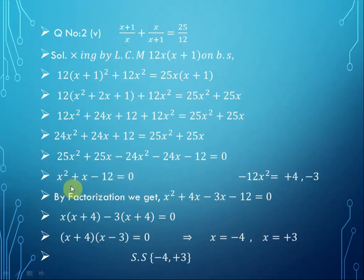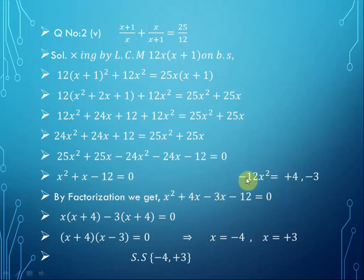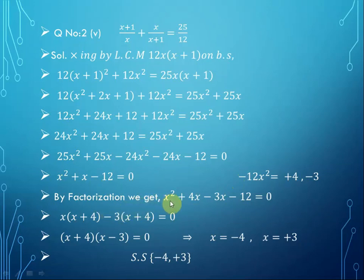This is the standard form of a quadratic equation. For factorization, we multiply x² by minus 12 to get minus 12x². The possible factors of minus 12 are plus 4 and minus 3. Using the mid-breaking method, we write: x² plus 4x minus 3x minus 12 equals 0.